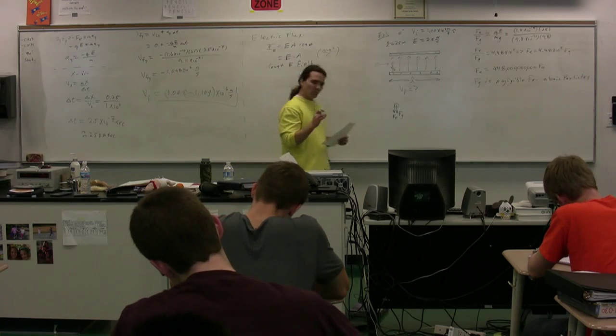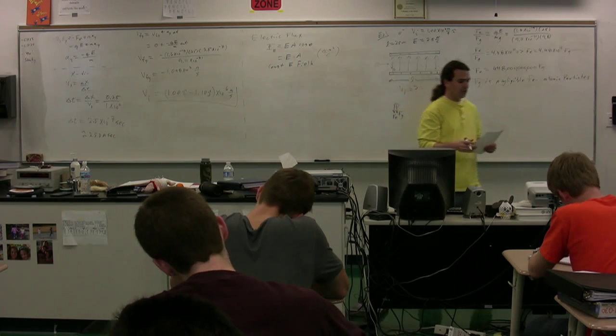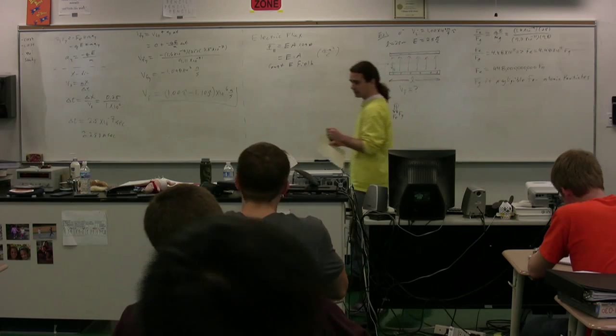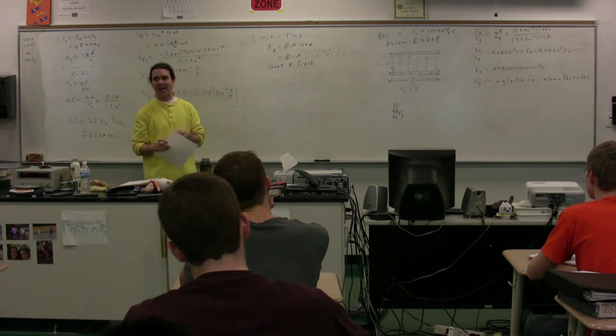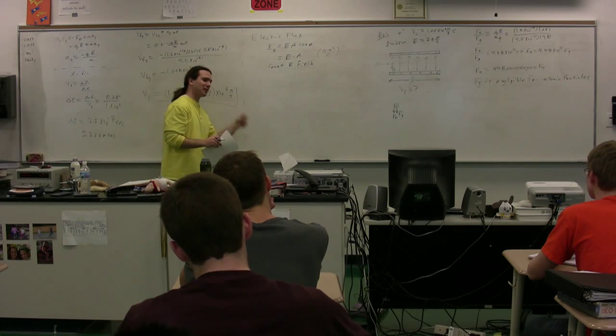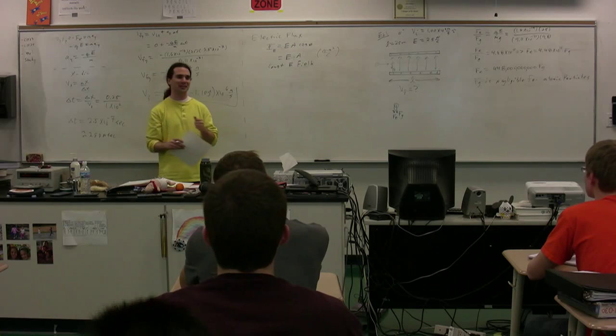Okay, now, E A cosine theta. E is the electric field. A is the area. And theta is the angle between the direction of the electric field and the direction of the area.